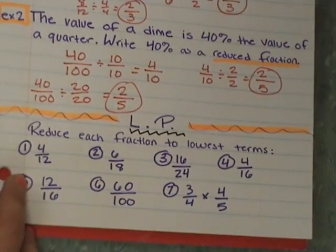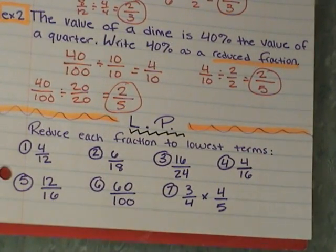And here is your lesson practice. Reduce each fraction to its lowest terms. Remember, you can do this by the GCF or you can do it by doing one or two steps. So 4 twelfths, 6 eighteenths, 16 over 24, 4 over 16, 12 sixteenths, 60 over 100, and then 7 is 3 fourths times 4 fifths. Do that multiplication problem and then reduce your answer.